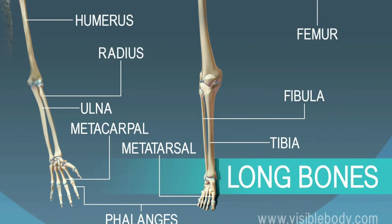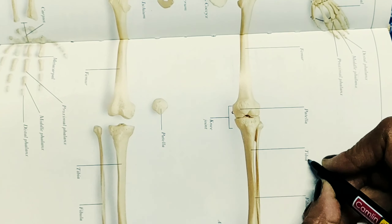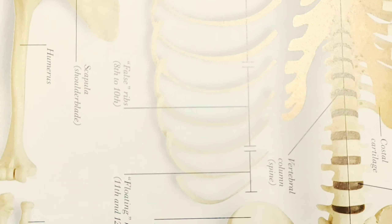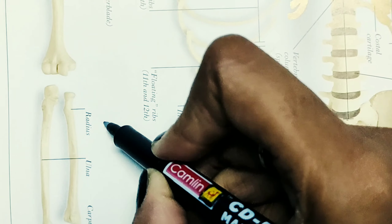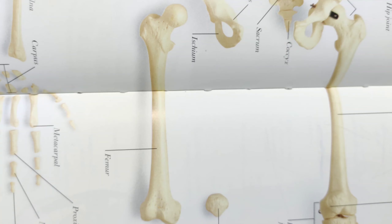The next category is long bones. Long bones include the lower limbs: Femur, Metatarsals, and Phalanges. Upper limbs include the Humerus, Radius, Ulna, Metacarpals, and Phalanges. The Femur is the largest bone in our body.